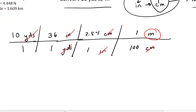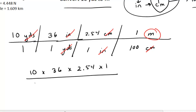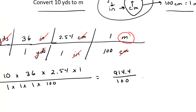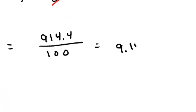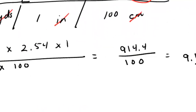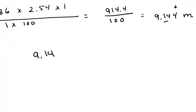Now I'm going to write out the math longhand. The numerator is 10 times 36 times 2.54 times 1. The denominator is 1 times 1 times 1 times 100. Plugging that into my calculator, I get 914.4 divided by 100, which equals 9.144 meters. We're going to worry about just two decimal places — this rounds down — so my correct answer is 9.14 meters.